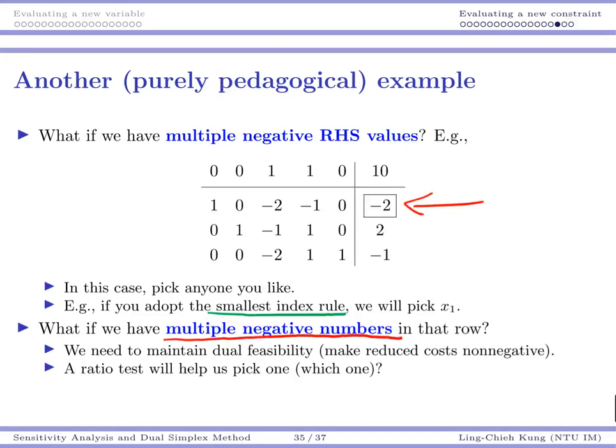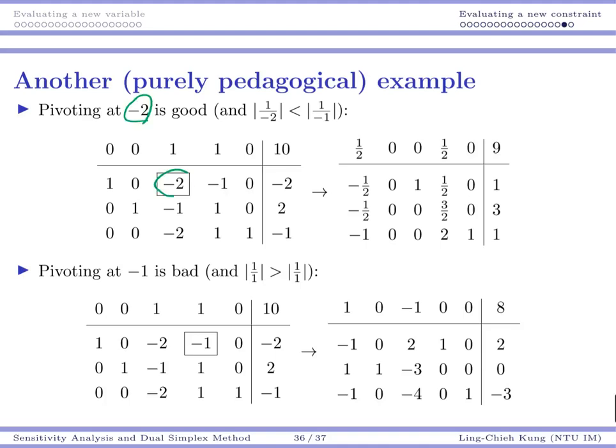We have this particular leaving variable. Then what's even more important is that we now have multiple negative numbers: negative two and negative one. One of them must be the pivot, but which one? Well, the answer is actually very easy because we know we need to maintain dual feasibility—we need to make all those reduced costs to be non-negative. So in the worst case, we may do some kind of experiments. Let's try to pivot at negative two to see whether this number becomes negative, or let's try to pivot at negative one and to see the other negative reduced cost whether it becomes negative.